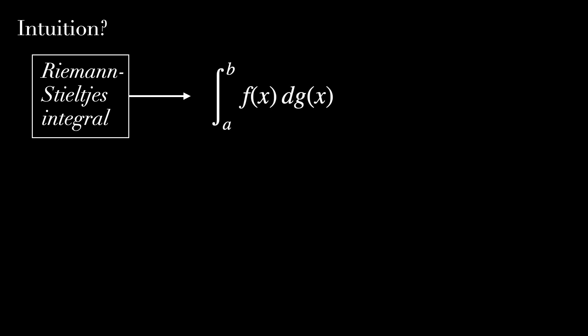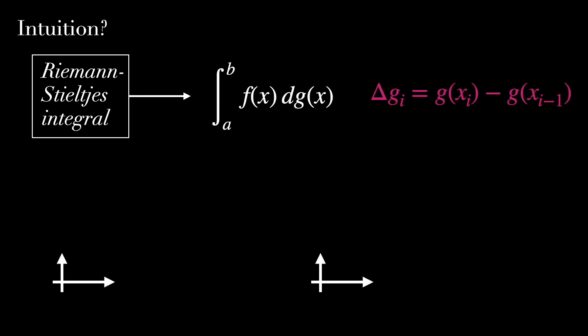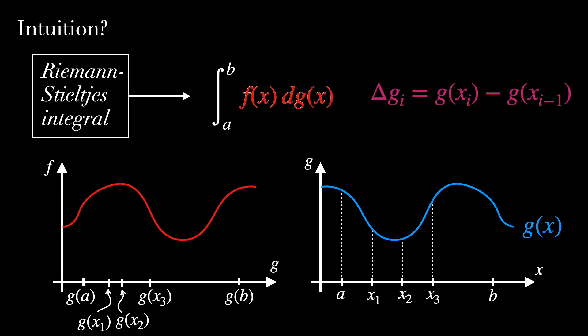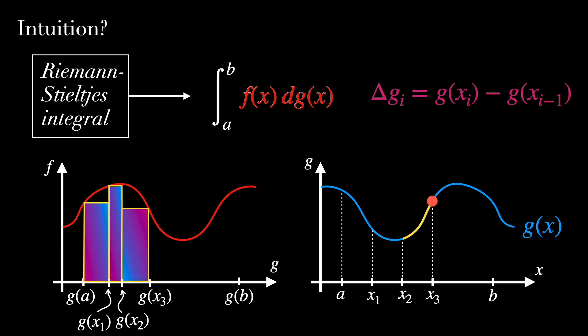In the Riemann-Stieltjes integral, the increments g(xᵢ) - g(xᵢ₋₁) represent changes in the function g(x). This allows for more flexibility in what is used as the differential, so the small increments in the integration process. The function g of x could be non-linear, stepwise, or even more complex than that.